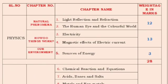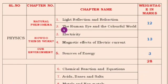The next very important part is the blueprint — how marks are allotted. In physics, the first topic is Natural Phenomena. This covers light, reflection, and refraction, and the second chapter is the human eye and the colorful world. For these 2 chapters together, 12 marks are allocated.